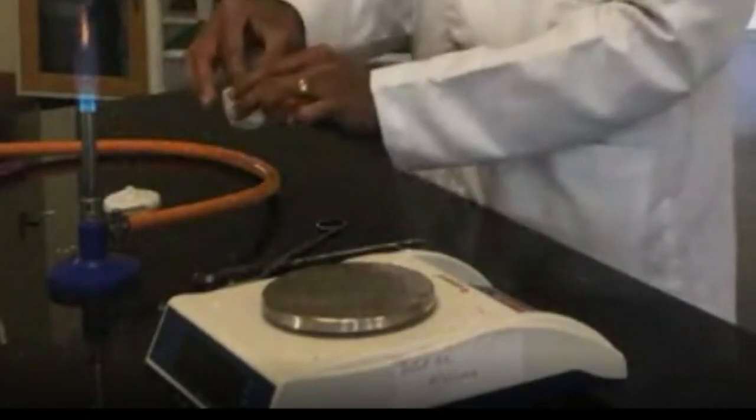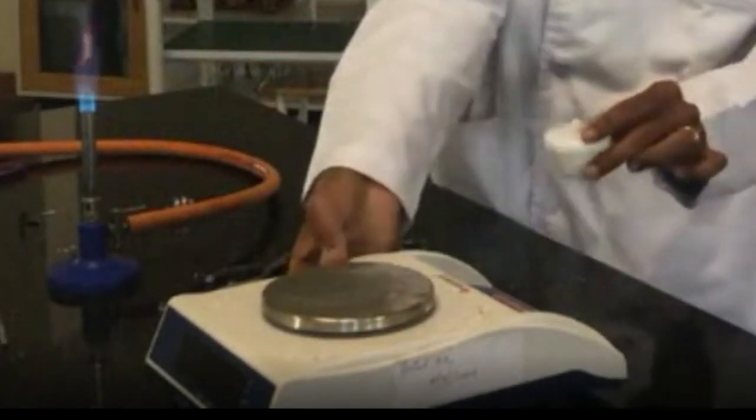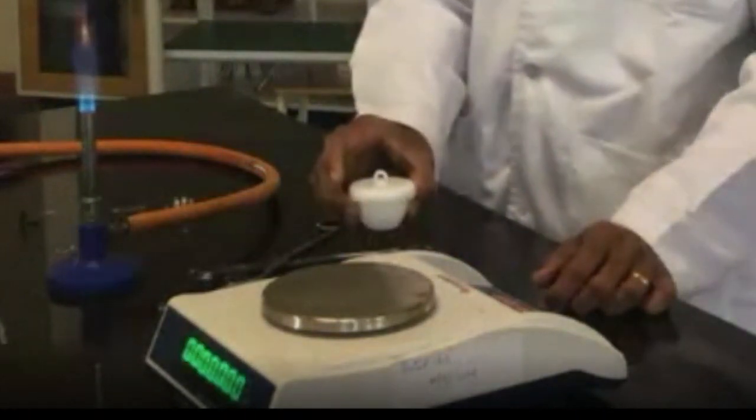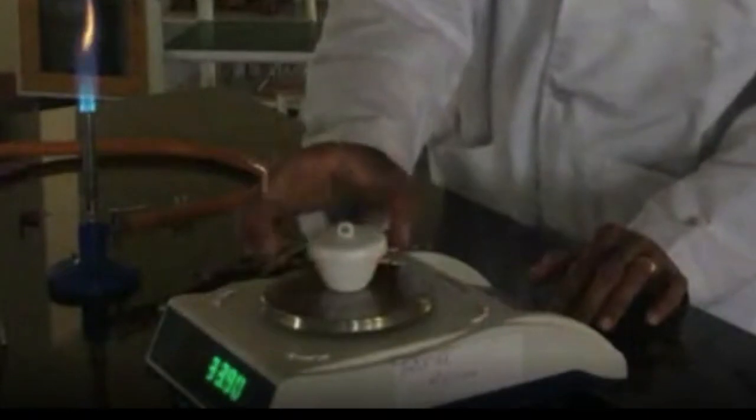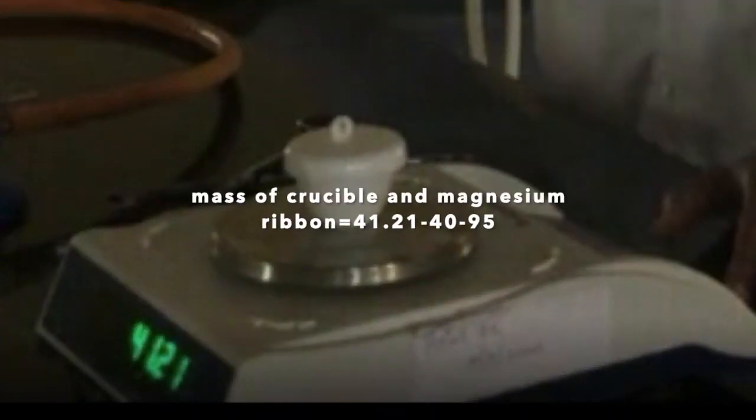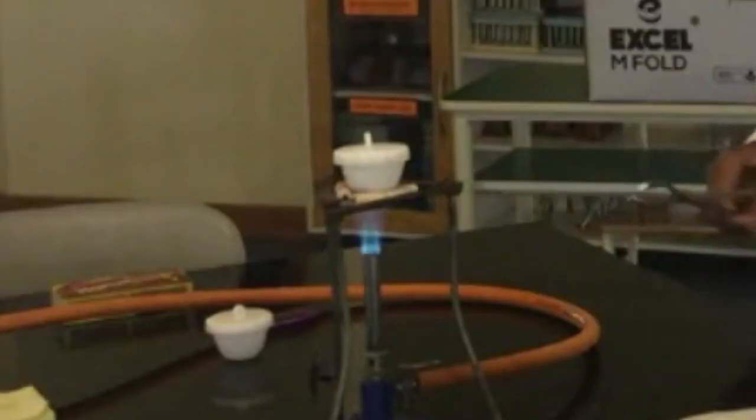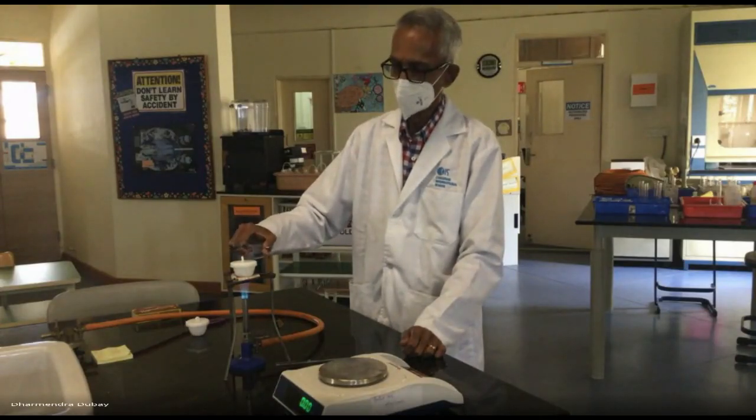Before burning it, I will weigh the empty crucible with the lid using a 2dp balance. So the empty crucible with the lid is 40.95, 41.21.